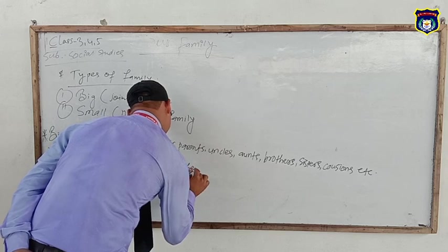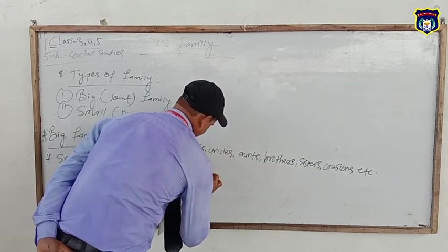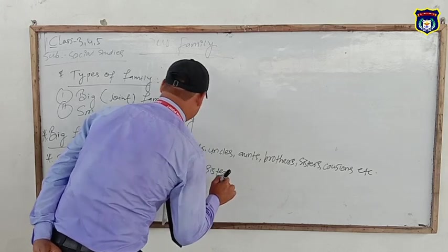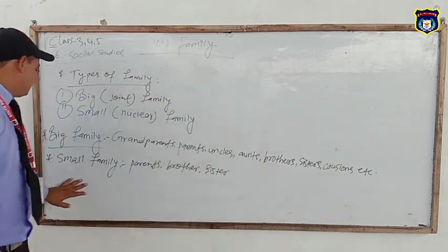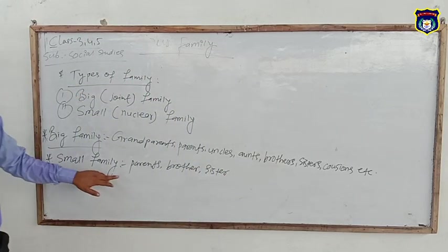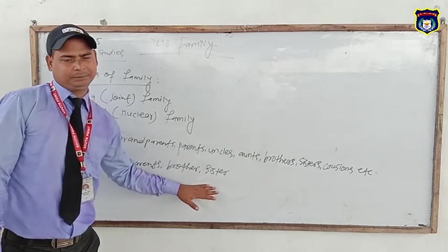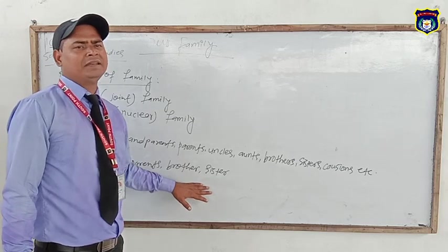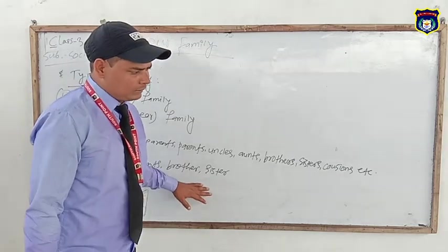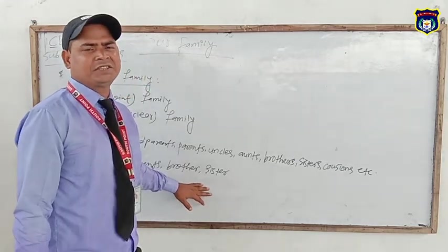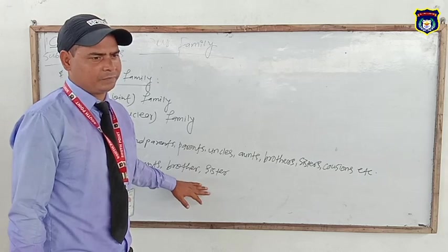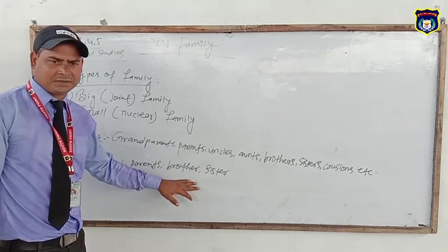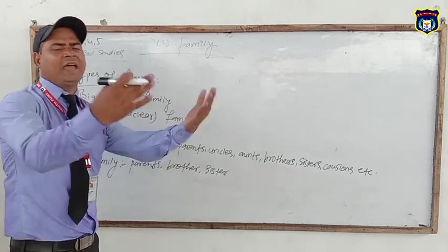Now I am going to show you a small family. That is a small family: parents, brothers, sisters. Maximum, in a small family, there are six members. And in big families, there are more than six members.